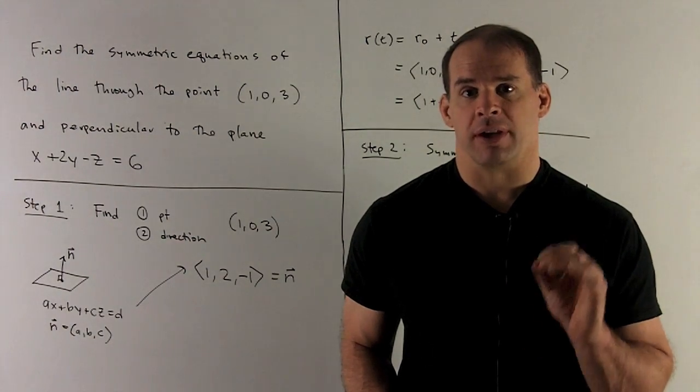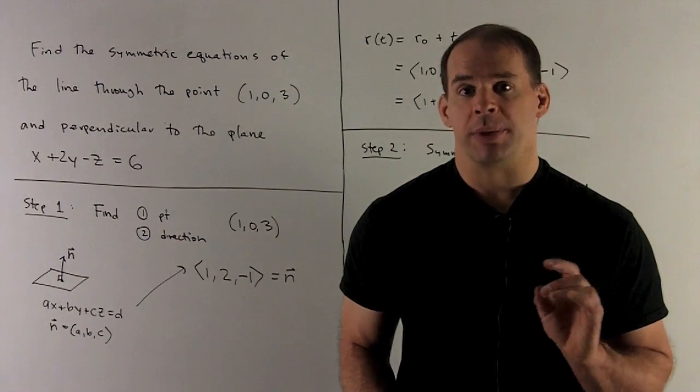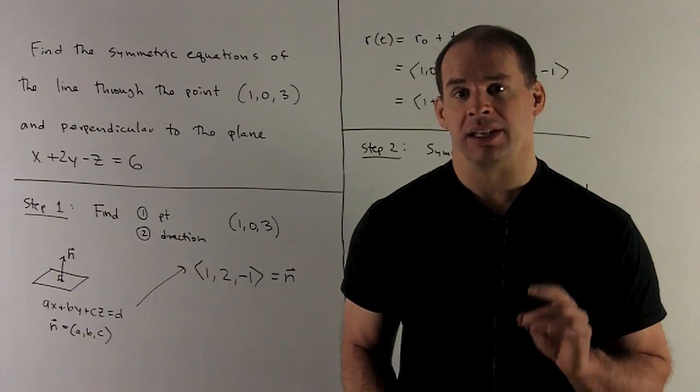Find the symmetrical equations of the line through the point (1, 0, 3) and perpendicular to the plane x plus 2y minus z equals 6.